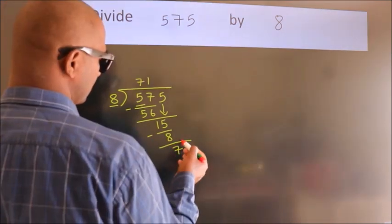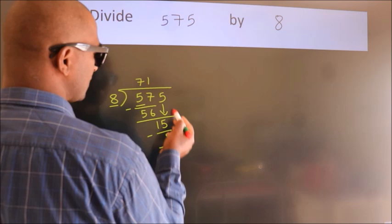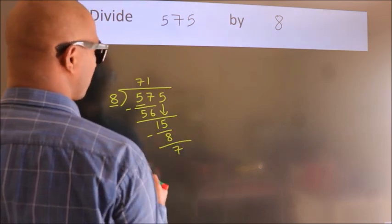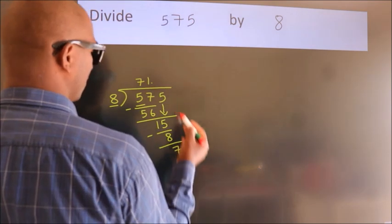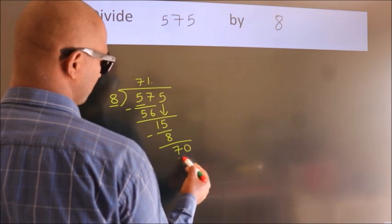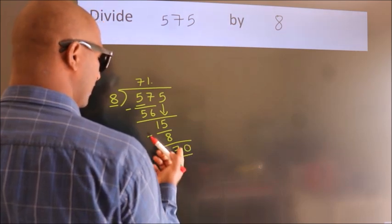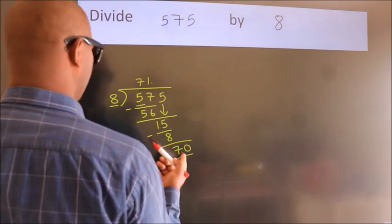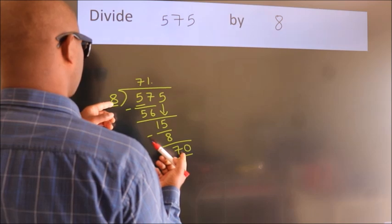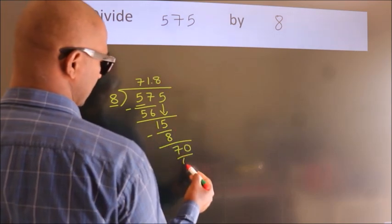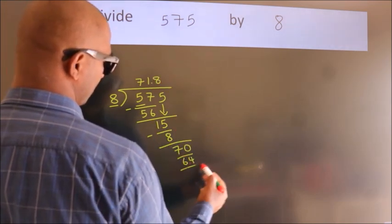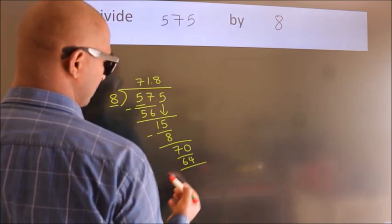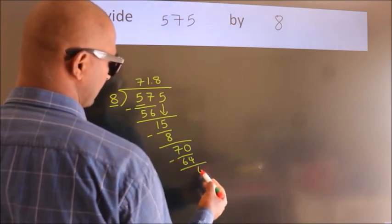After this, there are no more numbers to bring down. So what we do is put a dot and take 0, making 70. A number close to 70 in the 8 table is 8 times 8, which is 64. Now, we subtract and get 6.